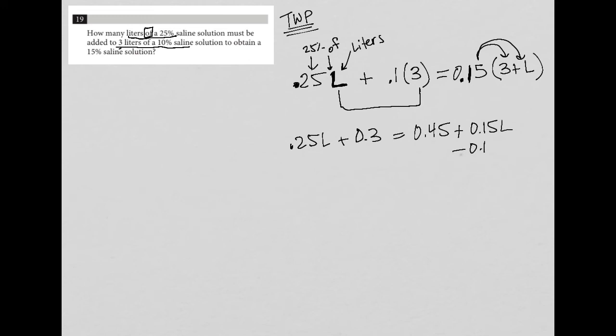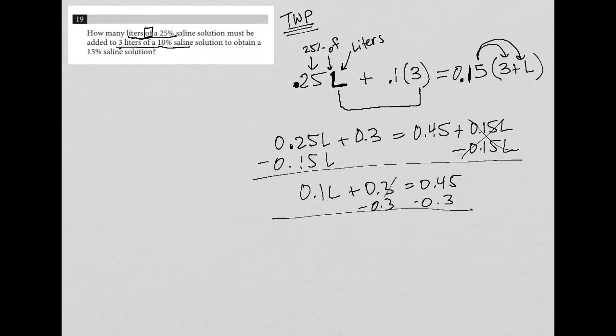Now I'm going to subtract 0.15L from both sides of the equation. So it's gone from the right side. 0.25 minus 0.15, well that's going to be 0.1L plus 0.3 equals 0.45. Subtract 0.3, so now that's gone from the left side, just combining like terms here.